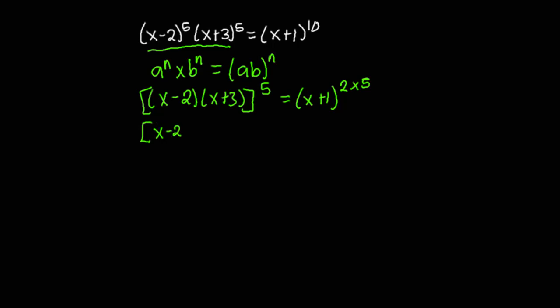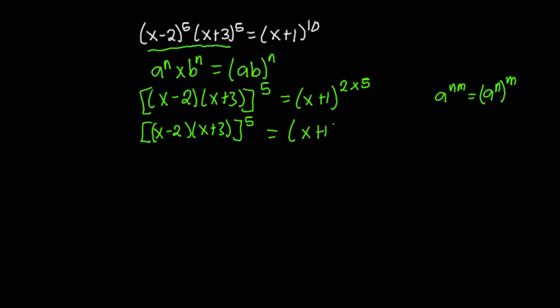So over here we have x minus 2 multiplied by x plus 3, all exponent 5. Now according to the properties of indices, a exponent n times n is the same as a exponent n all exponent n. So I'm going to use this property to simplify x plus 1 exponent 2 times 5, which gives me x plus 1 squared, everything to exponent 5, so that both sides have an exponent of 5.